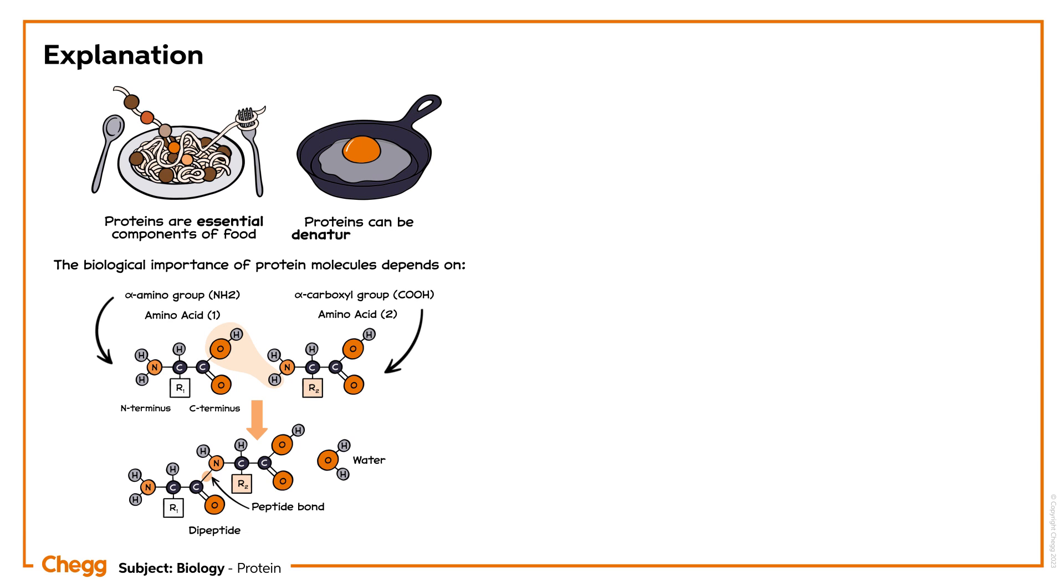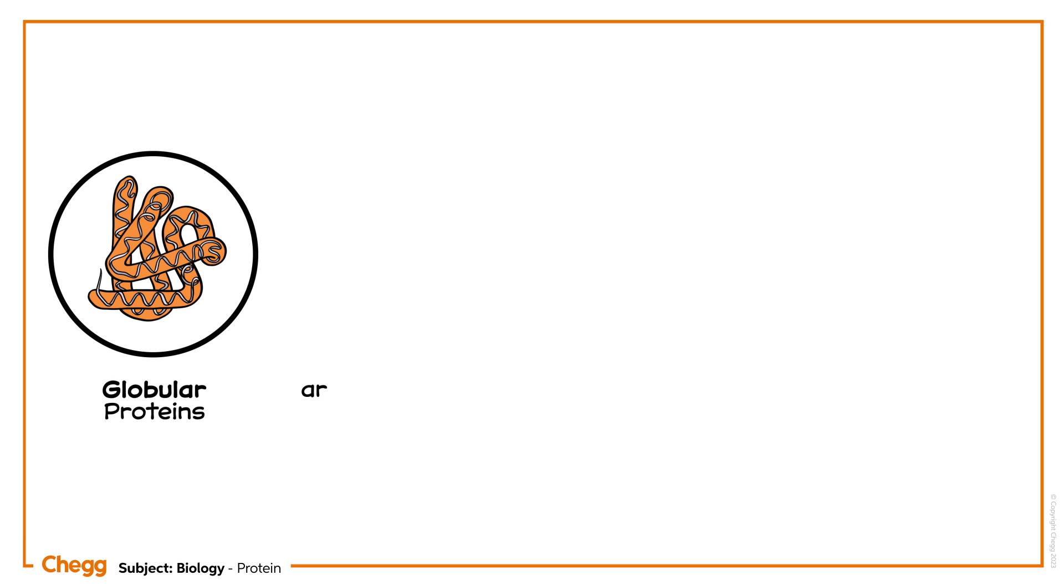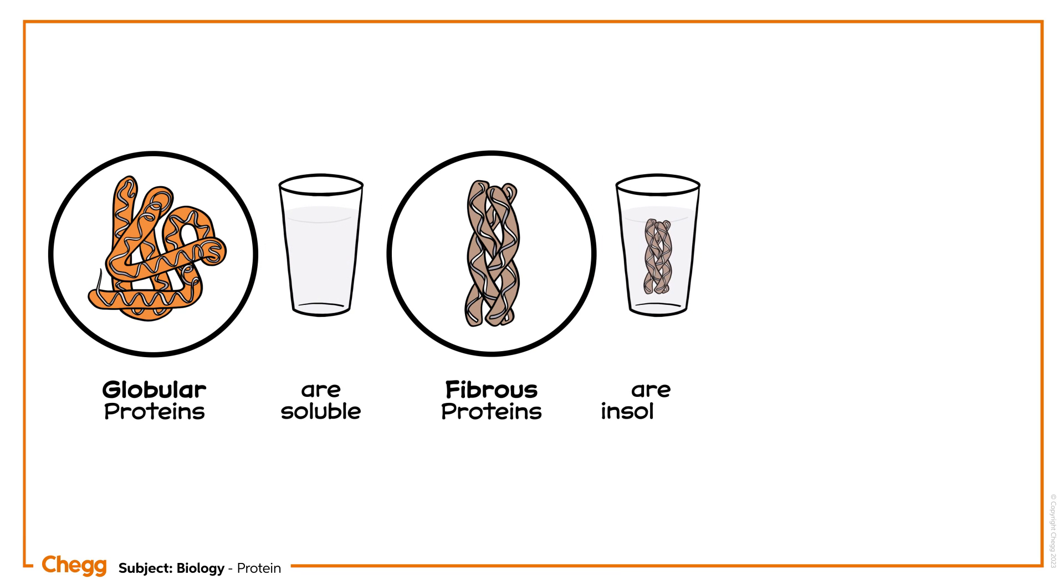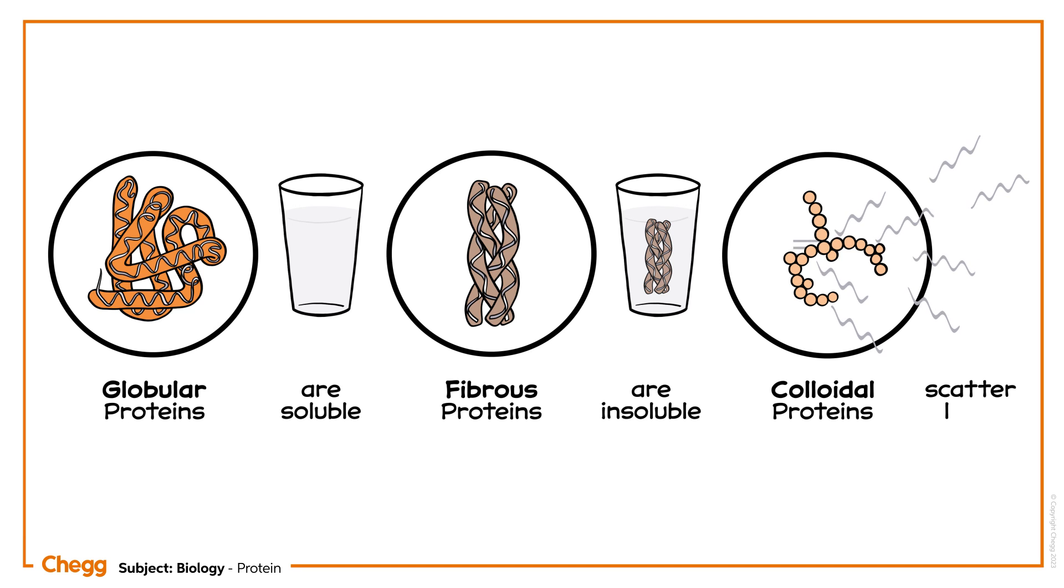Proteins can be denatured by heat. You might have prepared an omelette in which the egg yolk turns white due to the denaturation of albumin proteins. Do you know that globular proteins are soluble, whereas fibrous proteins are insoluble, and colloidal protein solutions are capable of scattering light?